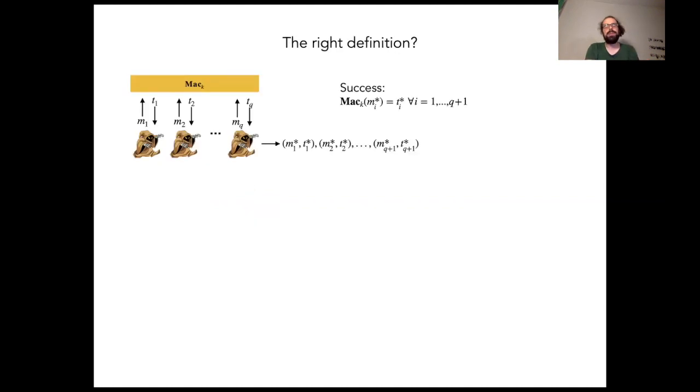Already before our work, there were some doubts in the literature about whether this is the correct definition of security. This was mainly suspected in a paper by Garg, Yuen, and Zhandry and later also elaborated on in the quantum lightning paper by Zhandry.